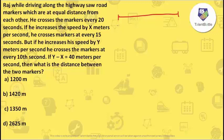We can do this question step by step. Suppose this is the distance on the highway which Raj is driving. There are some markers at equal distance from each other — marker 1, marker 2, marker 3, marker 4, and so on. Raj has started from here and crosses the markers after every 20 seconds, so that particular distance is traveled by Raj in just 20 seconds.